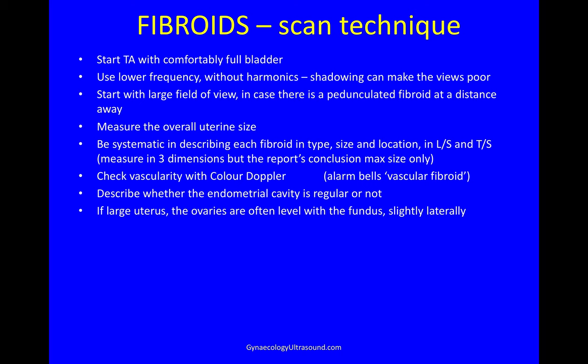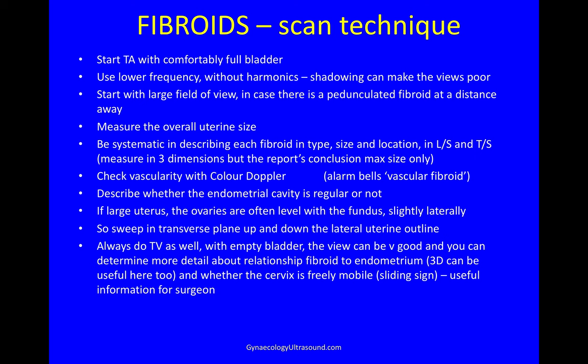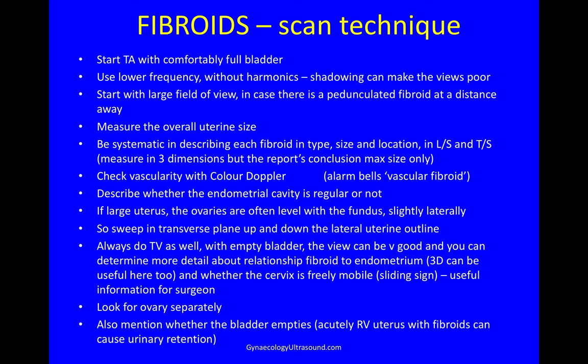If the uterus is large the ovaries will often be level with the uterine fundus, so sweep transversely up and down the lateral uterine outline to look for the ovaries. Always do a transvaginal scan with an empty bladder because the views can be really excellent, and you can look better at the relationship of the fibroid to the endometrium and look behind the cervix if there's good mobility. Always mention whether the bladder empties properly because an acutely retroverted uterus with fibroids can cause urinary retention.